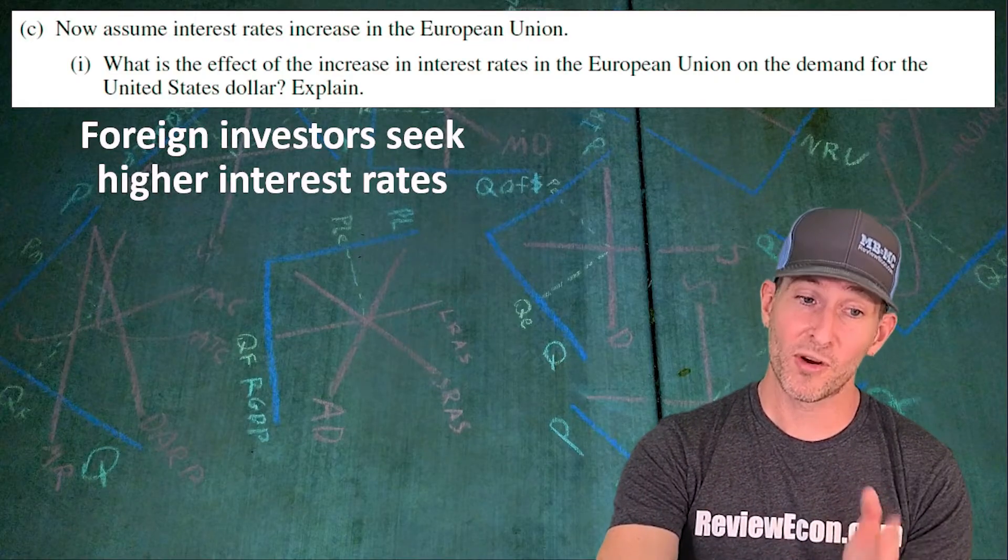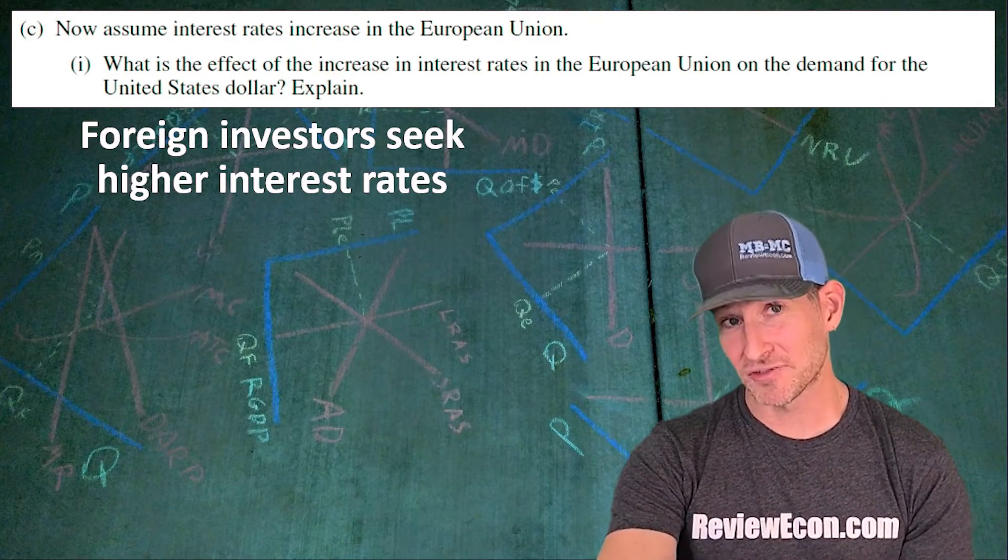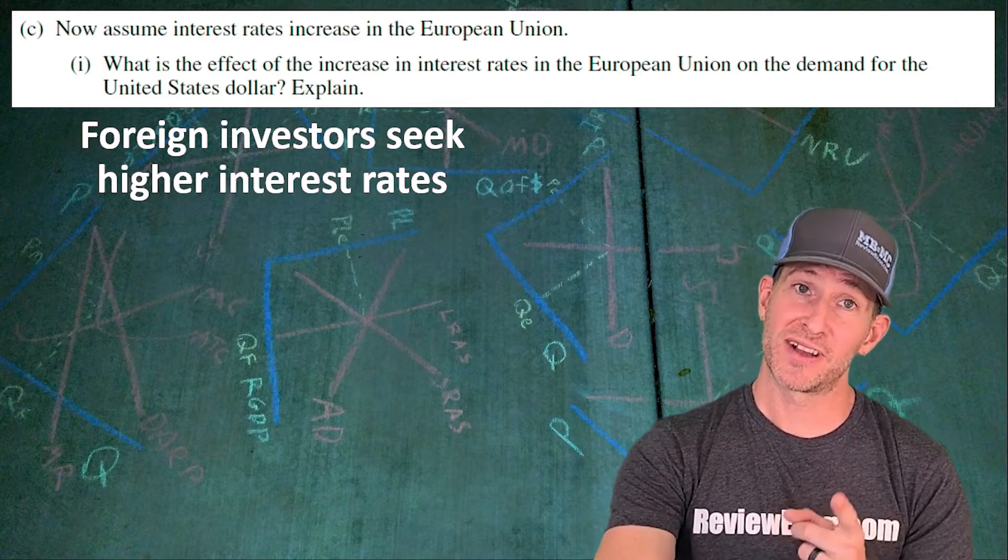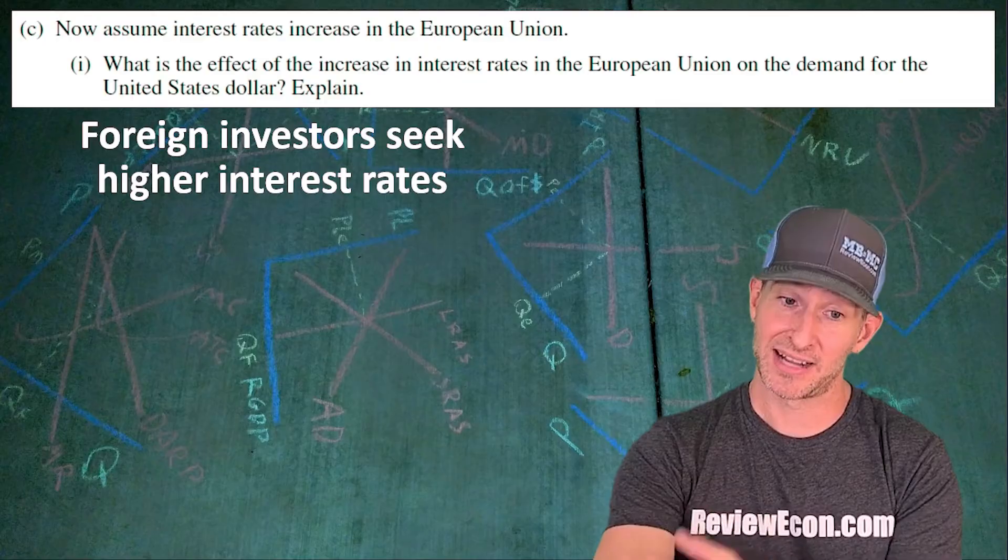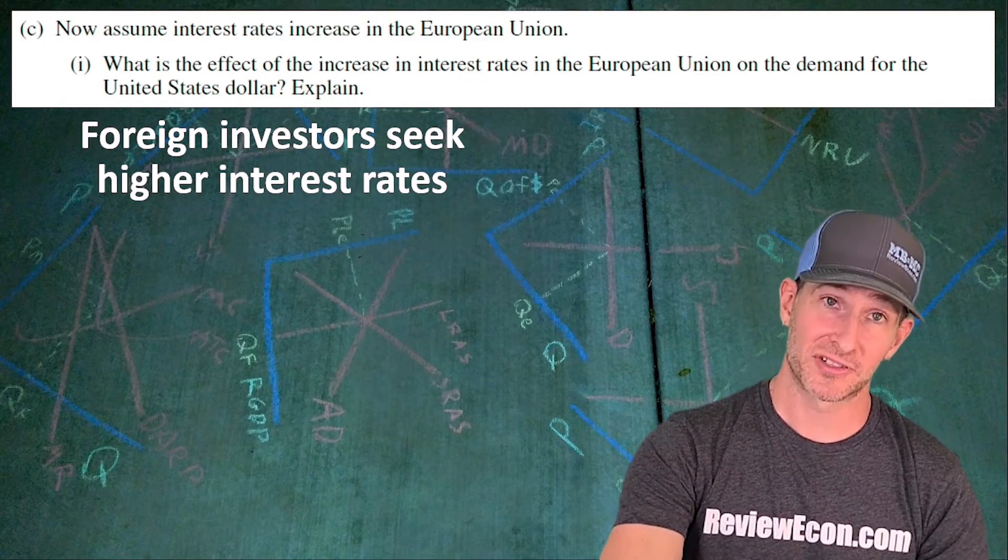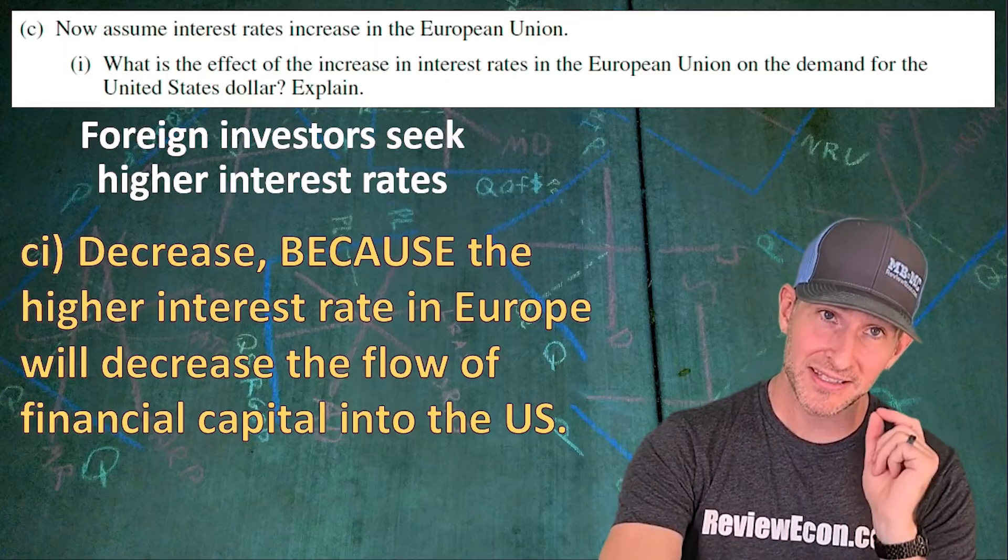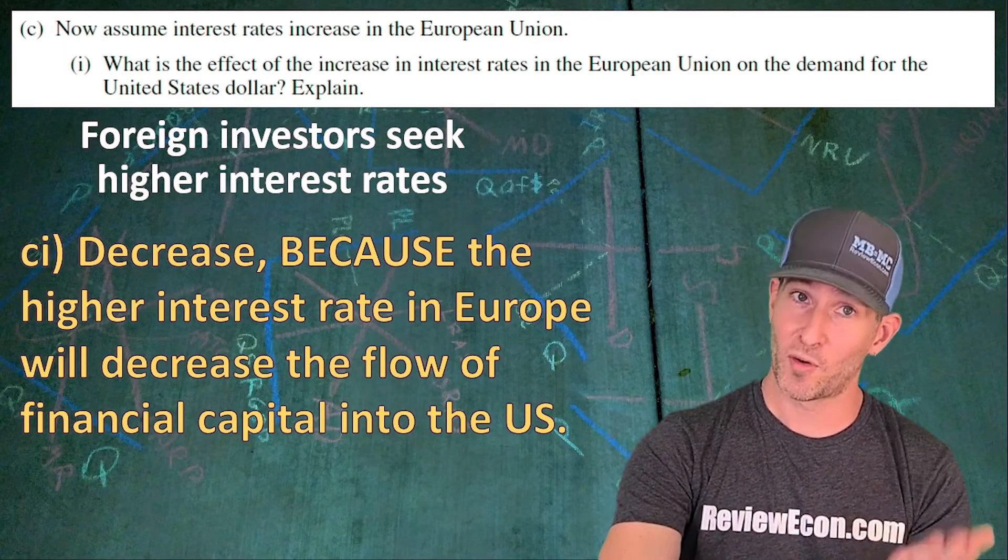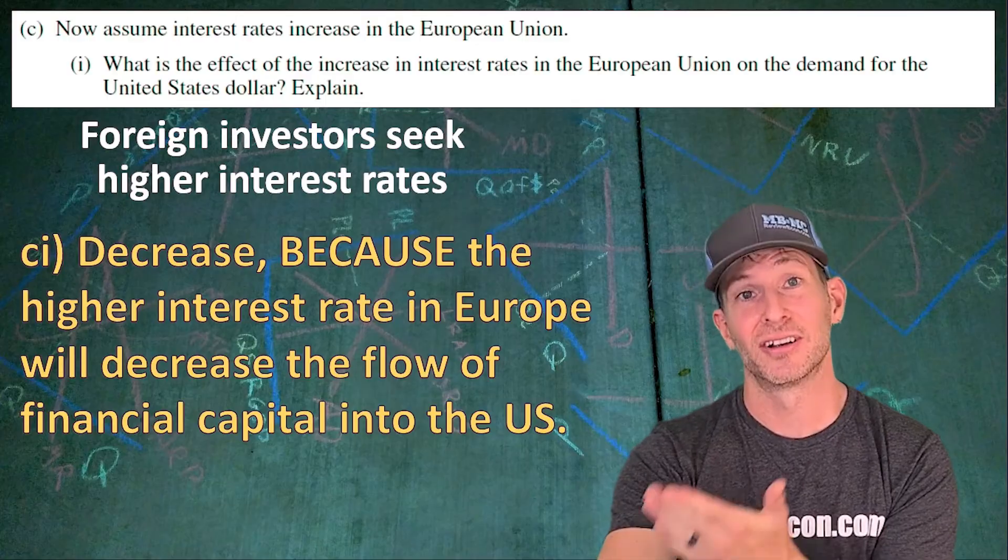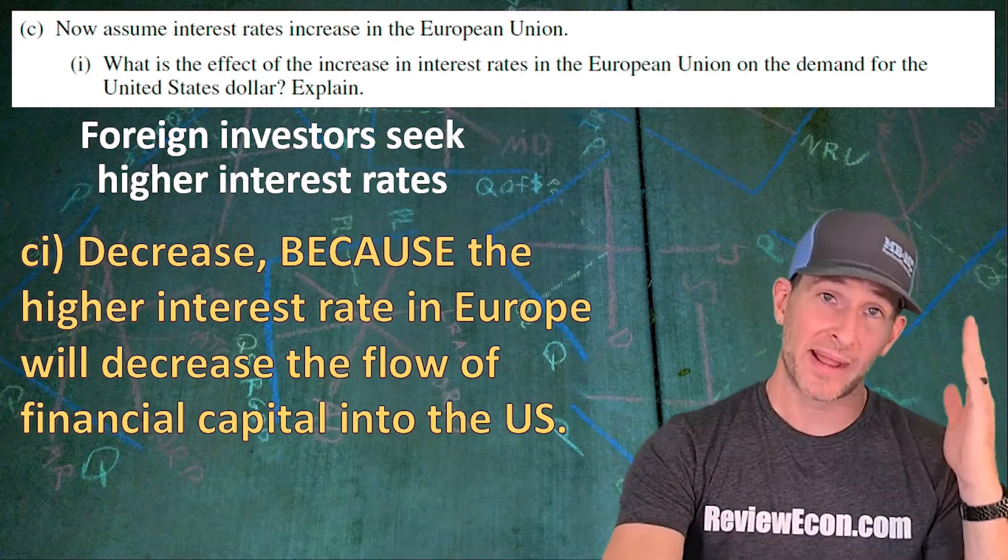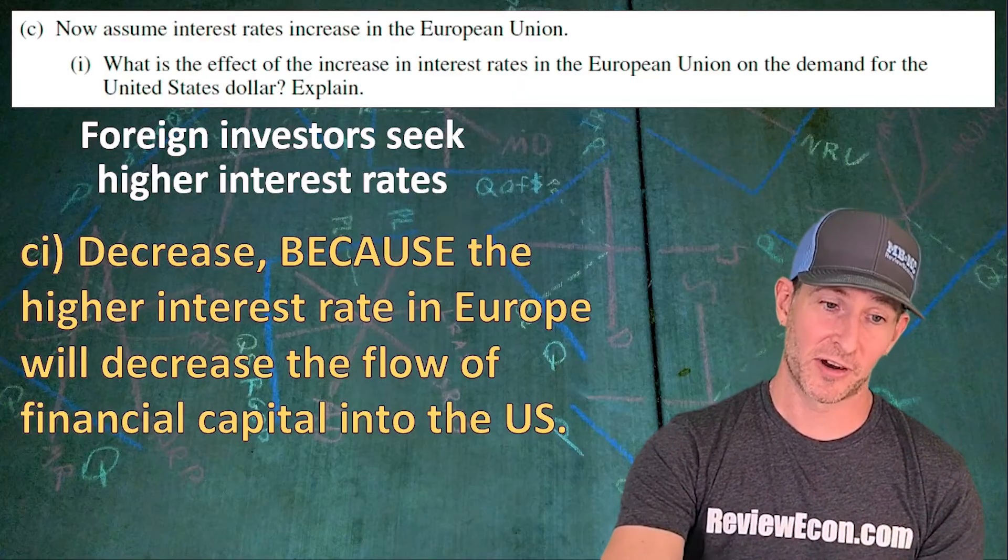The first thing we have to remember is that foreign investors seek higher interest rates. Since we have higher interest rates in the European Union, foreign investors will seek those high interest rates and they will abandon the interest rates that are lower in the United States. That will decrease the demand for U.S. dollars. That's because foreign investors are seeking the higher interest rates. So they demand the currency with the higher interest rates and they demand less of the currency with the lower interest rates.